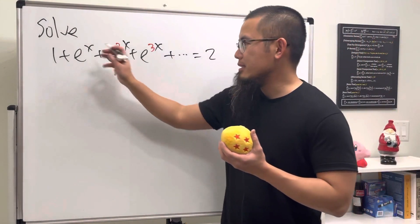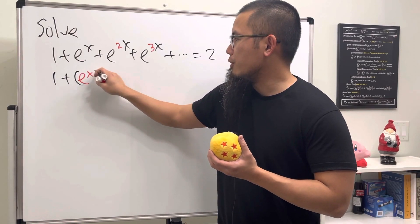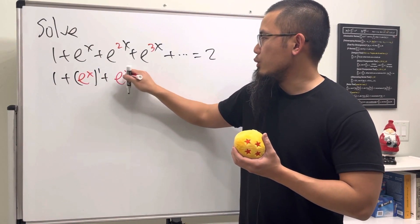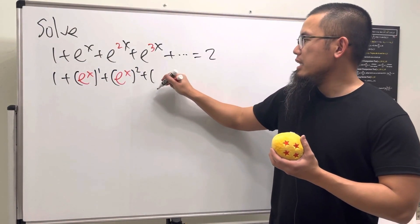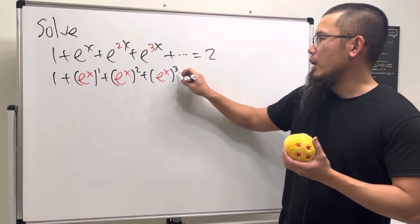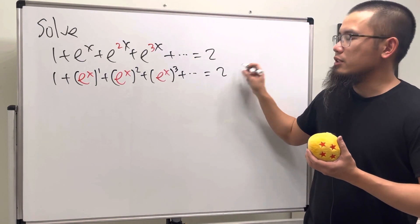But it's not so bad because this right here is just 1 plus e to the x in red and then to the first power, and we add e to the x in red to the second power, and we add e to the x in red to the third power and we add dot dot dot. So this is actually just a geometric series.